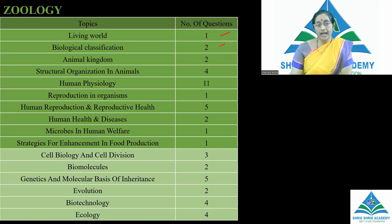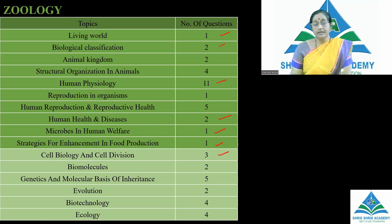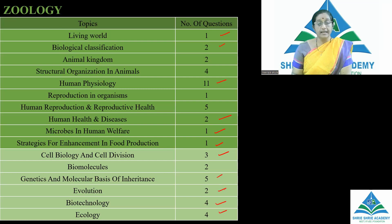Biological classification: 2 questions. Animal kingdom: 2 questions. Structural organization in animals. Four questions from human physiology: 11 questions. Human health and diseases: 2 questions. Microbes in human welfare: 1 question. Strategies for enhancement in food production: only 1 question appeared this year. Cell biology and cell division: 3 questions. Biomolecules: 2 questions. Genetics and molecular basis of inheritance: 5 questions. Evolution: 2 questions. Biotechnology: 4 questions. Ecology: 4 questions.